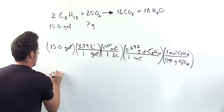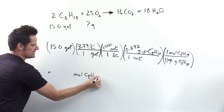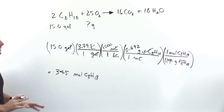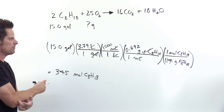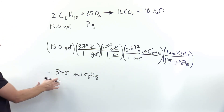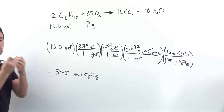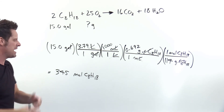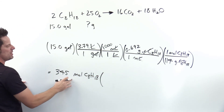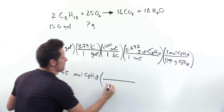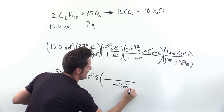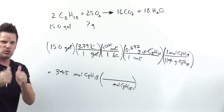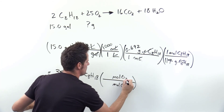The question doesn't ask for moles of octane — it asks for grams of O2 — so I need to keep going. I put moles of octane in the denominator of the next set of parentheses. Can moles of octane directly relate to moles of O2? Yes — moles and moles can touch. So I put moles of O2 in the numerator. The question asks for grams of O2, so I lay down another set of parentheses with moles of O2 in the denominator.